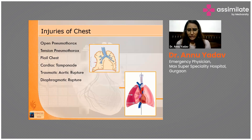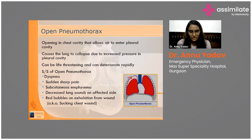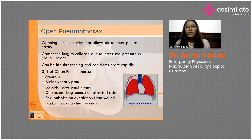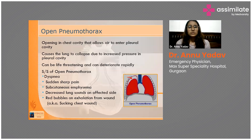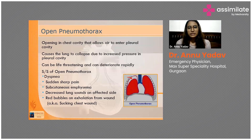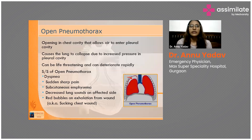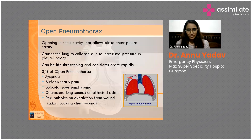Starting with open pneumothorax: in a penetrating injury, a stab to the chest makes an opening directly into the pleural cavity. This opening allows air to enter the pleural cavity, causing the lung to collapse due to increased pressure. The pleura is the covering of the lung. More air in the cavity compresses the lung to the opposite side, and the mediastinum can also shift to the opposite side.